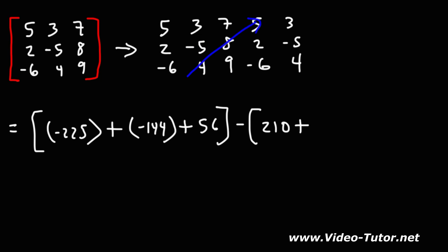And then 4 times 8 times 5: 4 times 5 is 20, 20 times 8. If you have 8 $20 bills, how much money do you have? 8 $20 bills is 160. And then finally, we have 9 times 2 times 3: 2 times 3 is 6, 6 times 9 is 54.